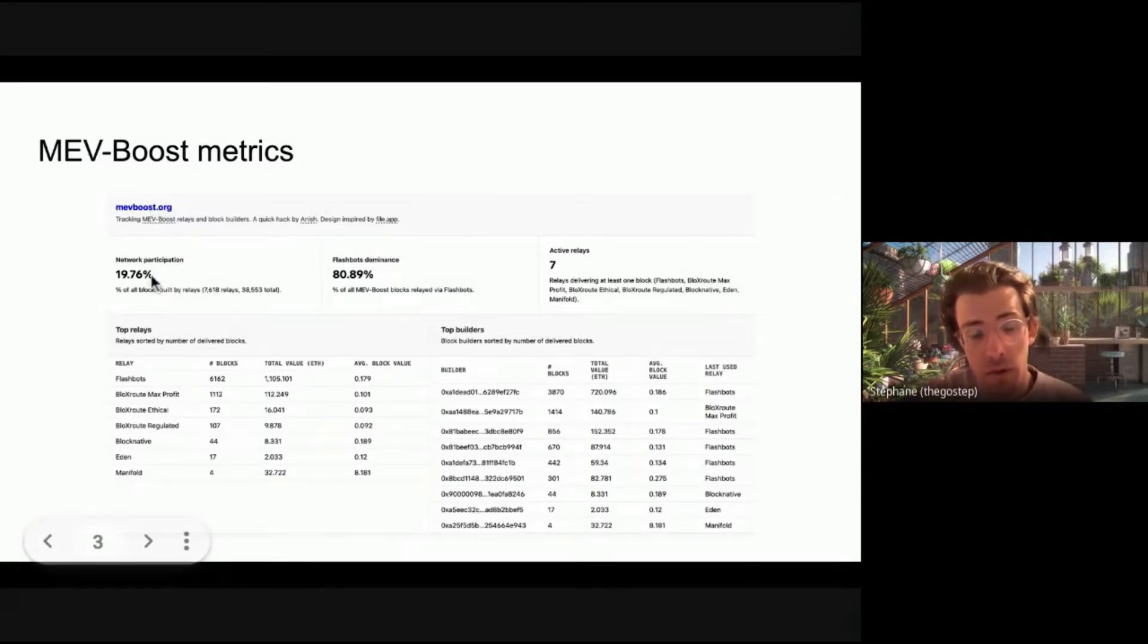So this is a community member who's deployed this table at mevboost.org that tracks the percentage of the network that's actively using MevBoost for producing blocks, and then keeps track of various different relays and block builders and their performance. So yeah, what we've seen is that in less than a week, now over 20% of the network is connected and producing blocks using MevBoost. And they've already accrued over 1000 ETH in value.